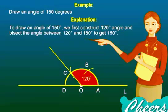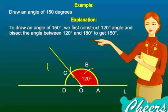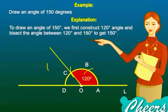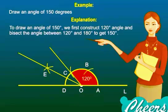Step 7: With C as center and radius more than half of CD, draw an arc in the interior of angle DOC. Step 8: With D as center and the same radius, draw an arc in the interior of angle DOC that cuts the previous arc at E. Step 9: Join OE. Angle AOE is the required angle of 150 degrees.